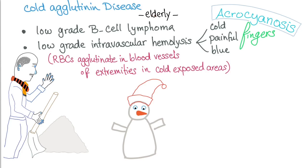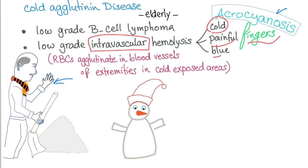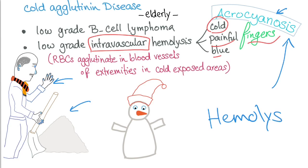The idiopathic or primary form of cold agglutinin disease usually affects the elderly, and there is often underlying low-grade B cell lymphoma. It causes low-grade intravascular hemolysis. The fingers become cold, painful, and blue — this is called acrocyanosis. A typical scenario is an elderly person going outside to shovel snow in winter, who suddenly develops acrocyanosis along with hemolysis and goes to the hospital.